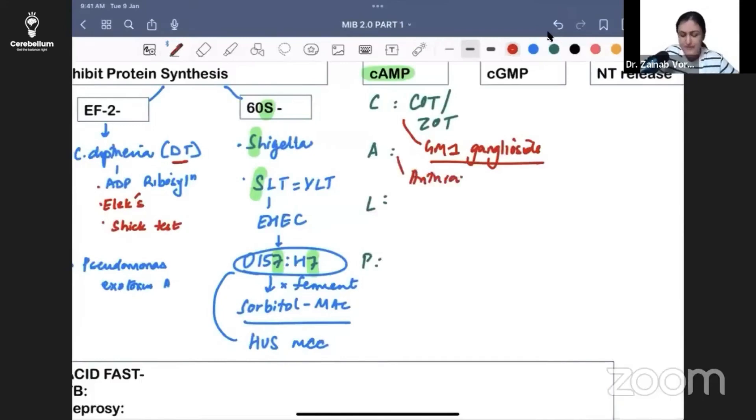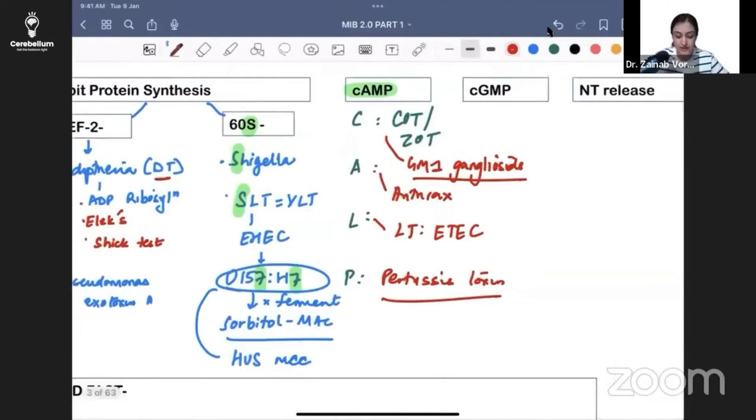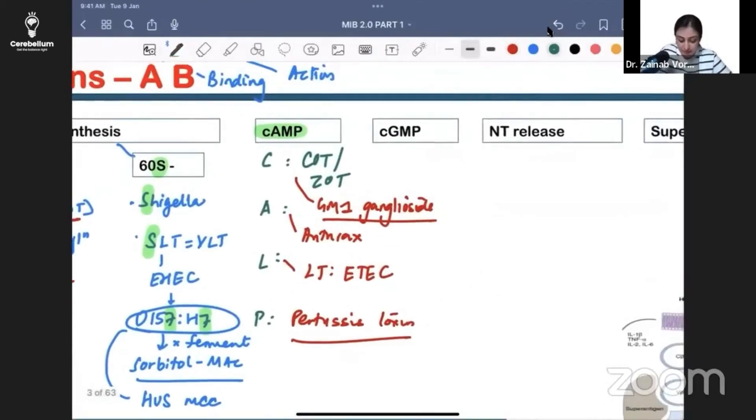A is for anthrax, L for LT toxin of ETEC (enterotoxigenic E. coli), and P is pertussis toxin. Pertussis is whooping cough - it has an inspiratory whoop, and in infants can be associated with apnea. For cGMP: LT is sorted, so ST of ETEC is cGMP.